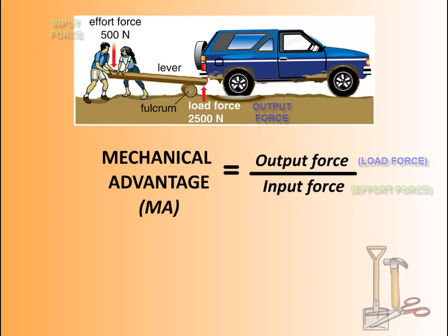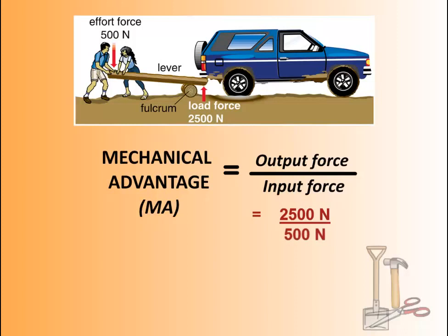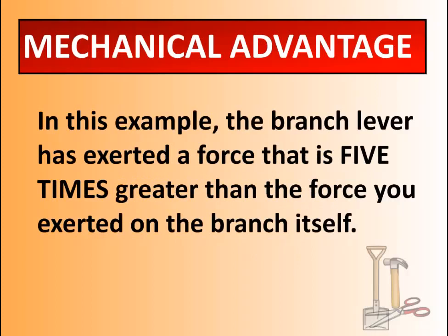So if we crunch some numbers: output force divided by input force is 2500 newtons divided by 500 newtons, which gives us five — just five, no units. Please copy this example in your notes. The branch lever has exerted a force five times greater than the force you exerted on the branch. We therefore say the branch has a mechanical advantage of five, because it exerted a force five times greater than you.